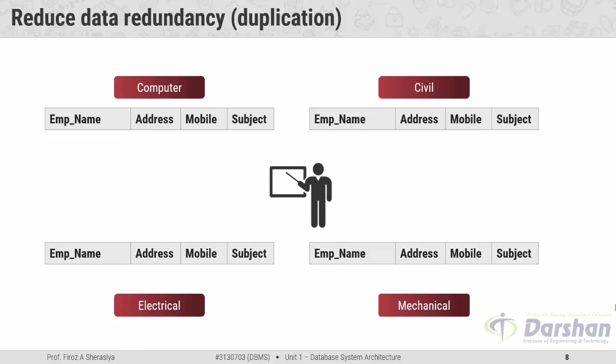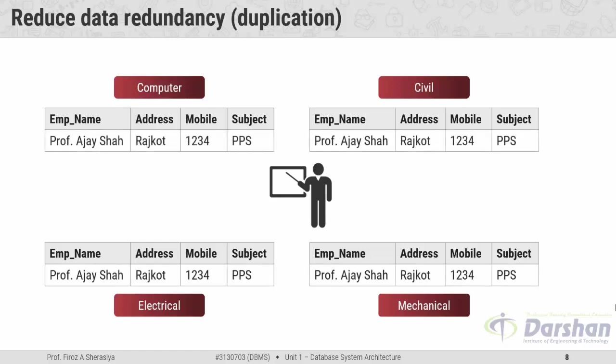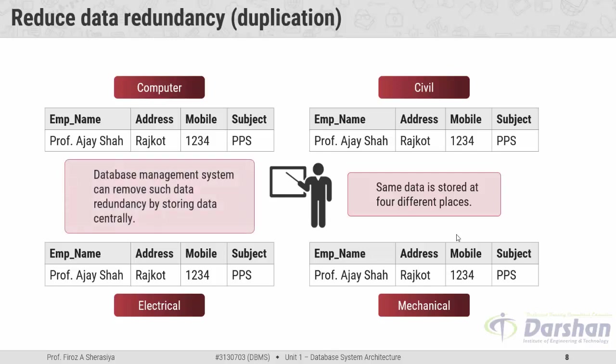So this faculty's details such as faculty name, address, mobile number, and subject are stored at four different locations: in the computer department's file, electrical department's file, civil department's file, and mechanical department's file. This same data stored at four different places is known as data duplication or data redundancy. This type of redundancy exists in file based systems, but if we use DBMS it can remove such redundancy by storing data centrally at one location, and DBMS also provides a facility of normalization to reduce data redundancy.